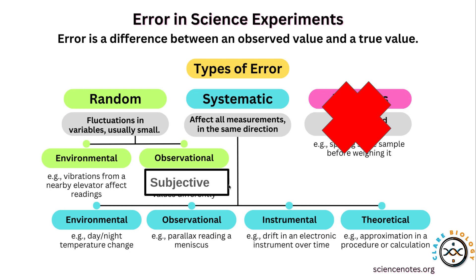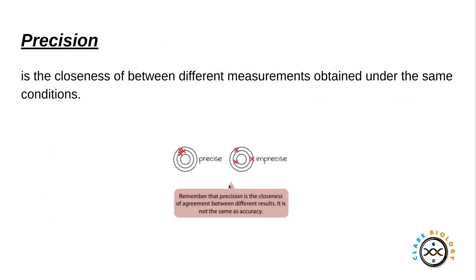The next one is precision and this is the closeness of results of different measurements obtained under the same conditions. And this is a really nice diagram here that represents this. This is taken from a document that OCR gives out for A-level biologists based upon typical mistakes that students make, which I will post underneath this video.